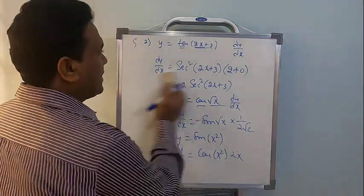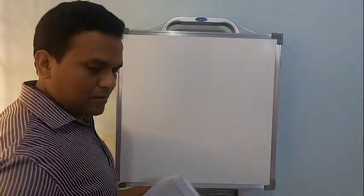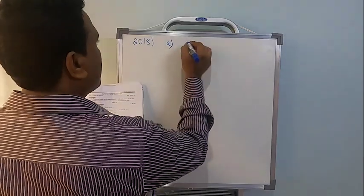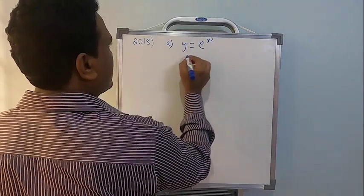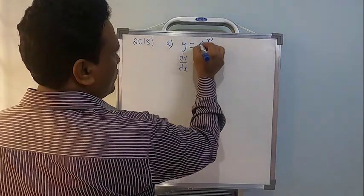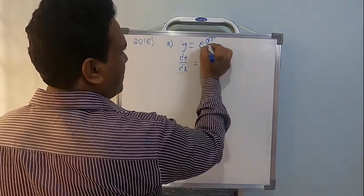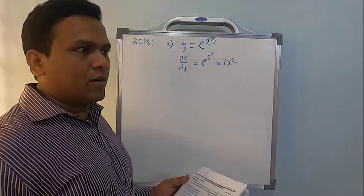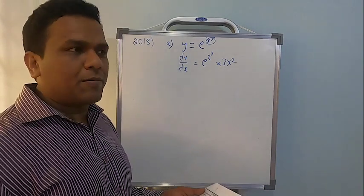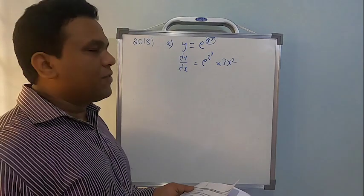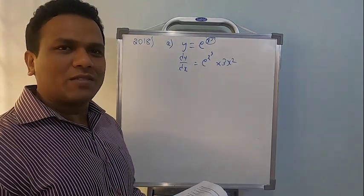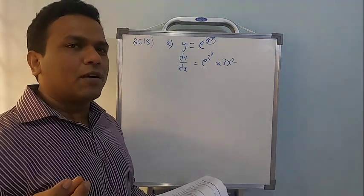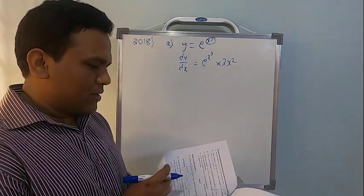In the 2018 annual examination, if y = e^(x³), find dy/dx. Since it is in the form of e^x, dy/dx = e^(x³) × 3x². If you have already practiced from the home exercises, these will feel very simple.